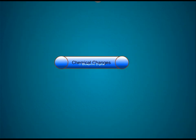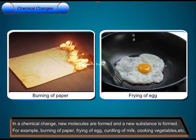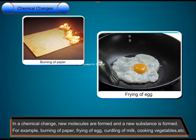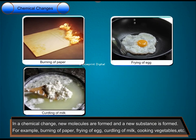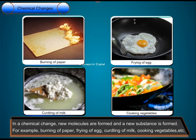Chemical changes. In a chemical change, new molecules are formed and a new substance is formed. For example, burning of paper, frying of egg, curdling of milk, cooking vegetables, etc.